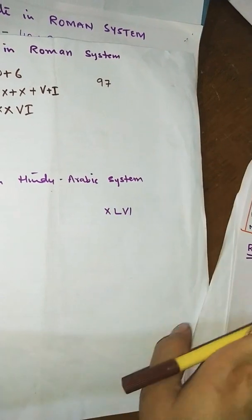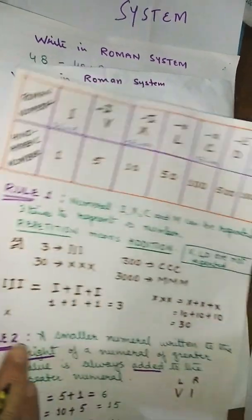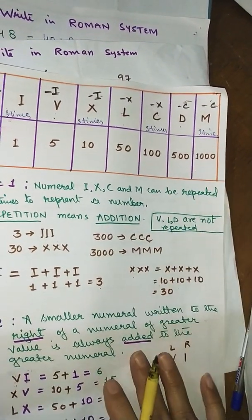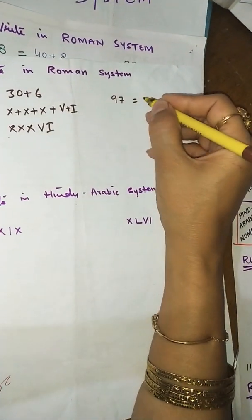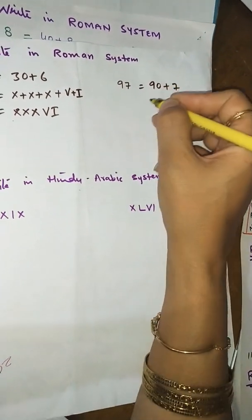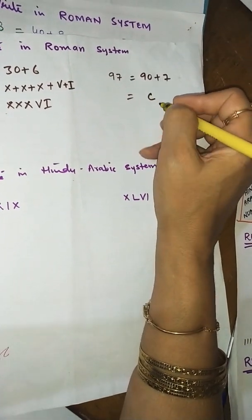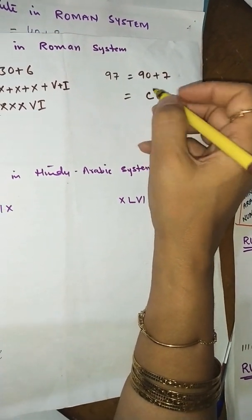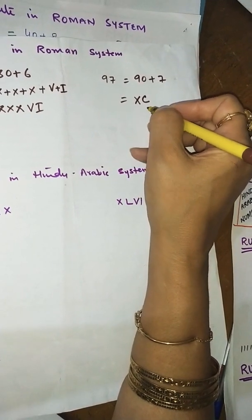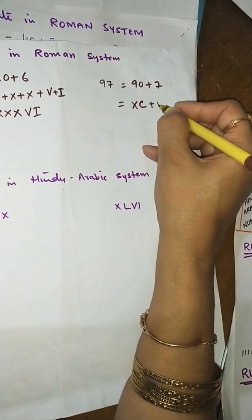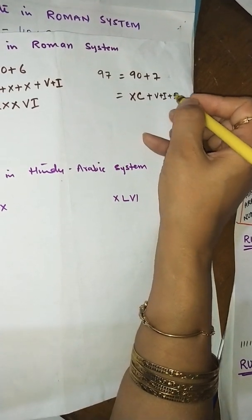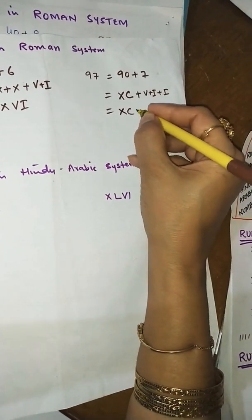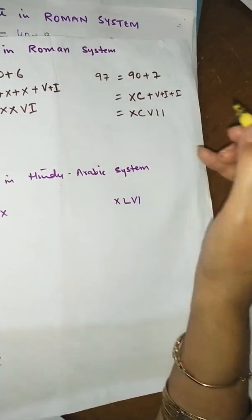Now write 97 in the Roman system. Expand: 90 + 7. For 90, subtract 10 from 100: XC = 90. For 7, write V + I + I = 5+1+1 = 7, that is VII. So 97 in Roman numerals is XCVII.